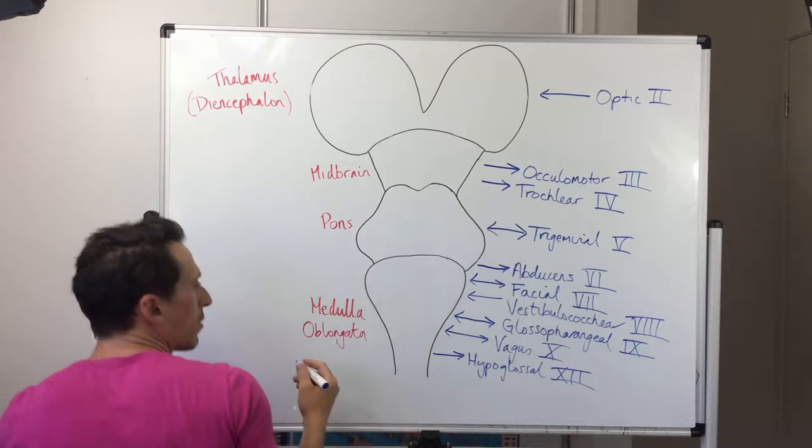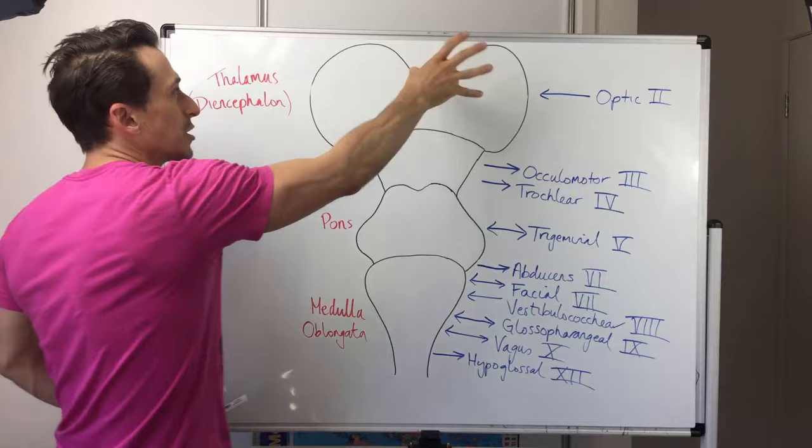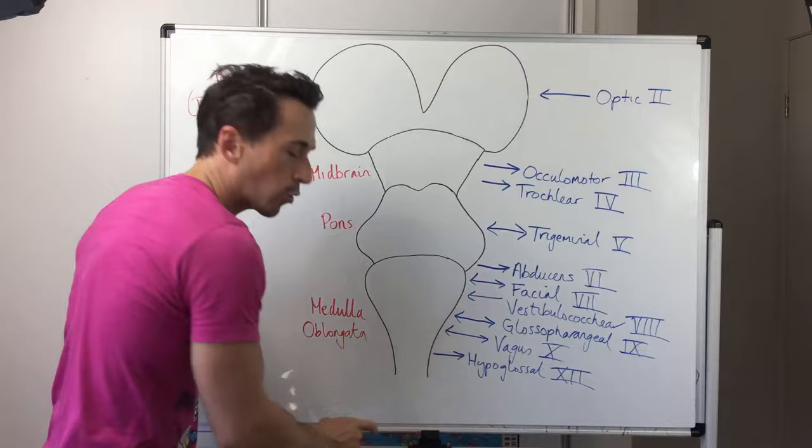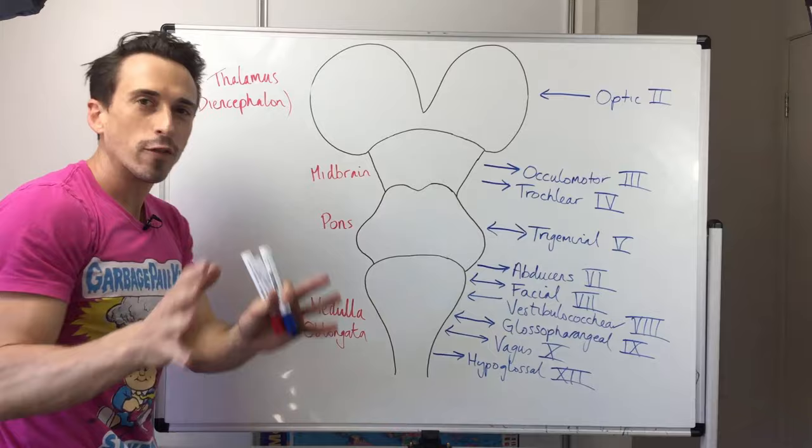We've missed out two cranial nerves. First is the olfactory nerve — the sense of smell — which comes in higher, more at the brain itself. We also haven't covered cranial nerve eleven, the accessory nerve, which plays a role in shrugging and is more associated with the cervical portion of the spinal cord. Now that we've drawn this up, let's look at the functions of the brainstem.